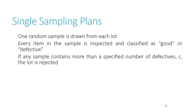In this lecture series of industrial engineering, today we will understand sampling plans. There are two types of sampling plans: single sampling and double sampling. In a single sampling plan, one sample is drawn from a lot. The lot size is fixed, and a fixed sample size is drawn from the lot. Each sample is inspected to judge whether an item is defective or acceptable, and we conclude whether the lot should be rejected or accepted.